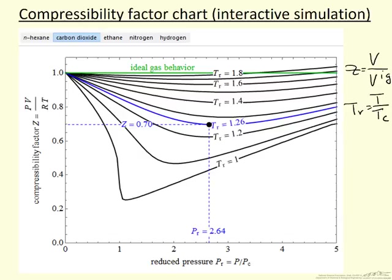You can see that the compressibility factor deviates from 1, it deviates more as we go to lower temperatures. We also see that if the pressure is low enough, then we approach ideal gas behavior. If the molecules are far enough apart that they don't interact, then the compressibility factor is 1.